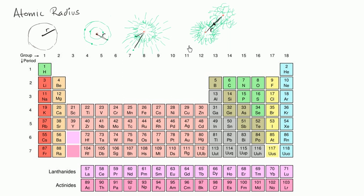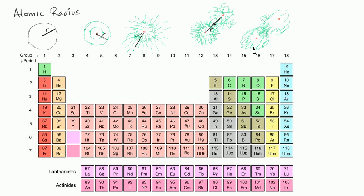Another way is to consider two atoms of the same element that are bonded to each other through a covalent bond. In a covalent bond, two atoms share electrons, so their electron clouds actually overlap with each other. The electrons in that bond can spend some time on one atom and some time on the other. When you have a covalent bond like this, you find the distance between the two nuclei, take half of that, and call that the atomic radius. So these are all different ways of thinking about it.